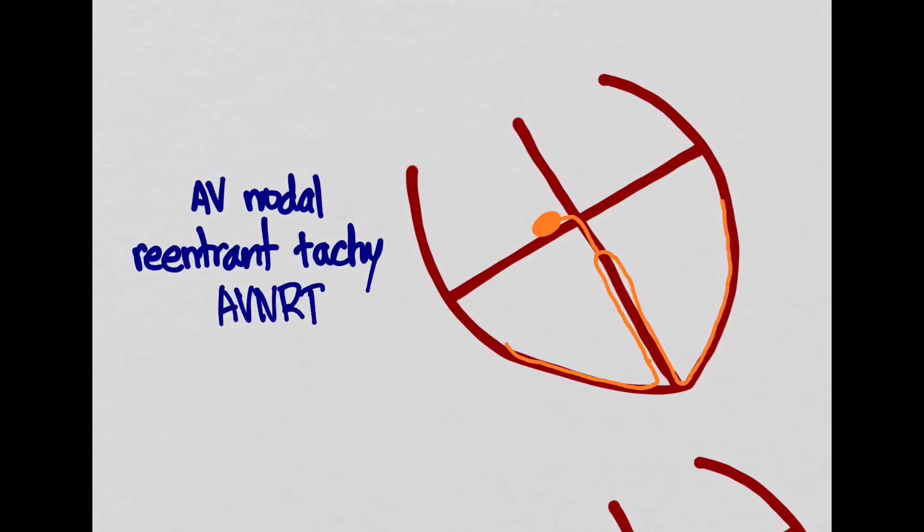Let's look first at the AV nodal reentrant tachycardia, AVNRT. In this one, you're going to have signal that goes through the AV node, and then there's a reentrant pathway that comes back up. Usually one of these is faster than the other one. Then what you'll see on the rhythm strip is you'll have a tachycardia and there won't be any P waves. It's going to be more regular than I'm drawing it. You'll probably see some T waves, but you won't see any P waves, since the origin of the tachycardia is not in the SA node, but the AV node.